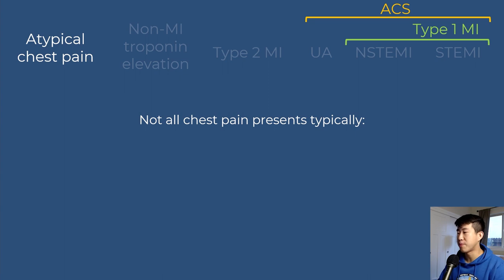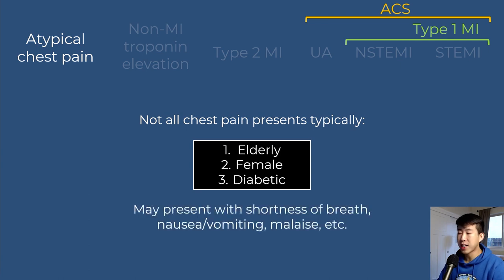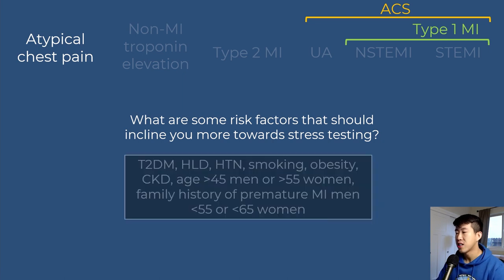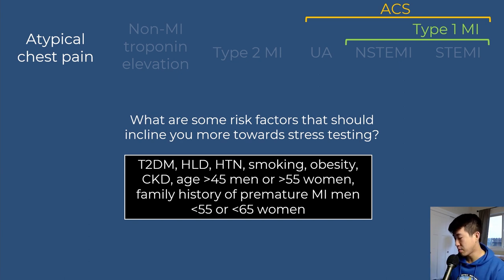Many patient populations present with chest pain atypically, including elderly, female, and diabetic patients, who may instead present with shortness of breath, nausea, vomiting, or malaise. Maintain a higher index of suspicion in these groups. Risk factors that should prompt stress testing include type 2 diabetes, hyperlipidemia, hypertension, smoking, obesity, CKD, age greater than 45 in men or greater than 55 in women, and family history of premature MI — defined as less than 55 in male relatives or less than 65 in female relatives.